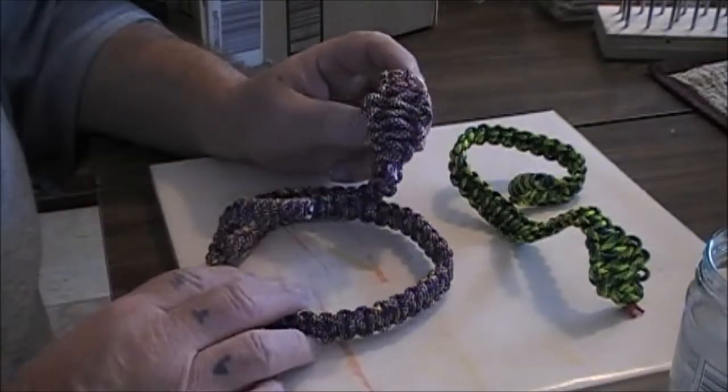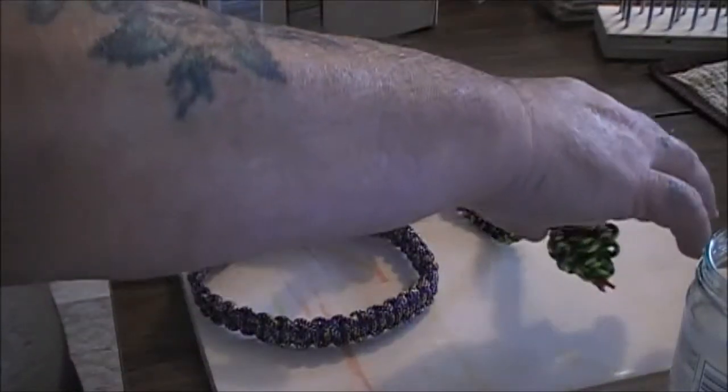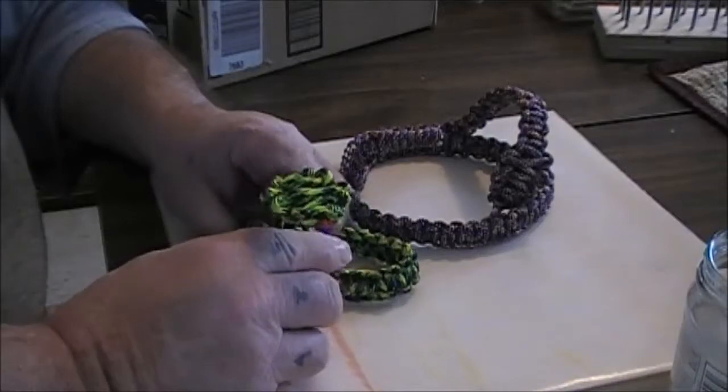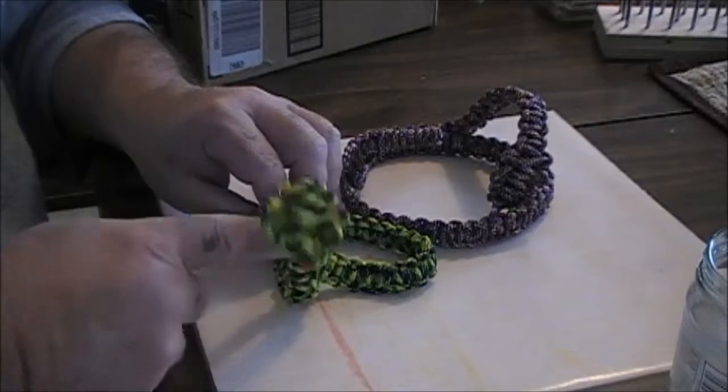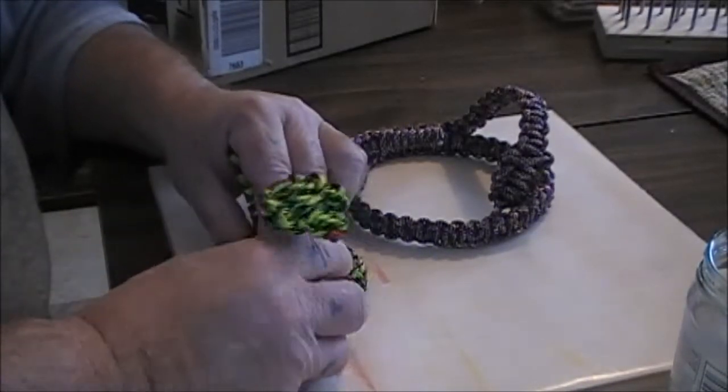I made these cobra snakes. This one turned out better, looks more like a snake because of the color. But see how flimsy it is? We're going to make those hard, stiffen them up.